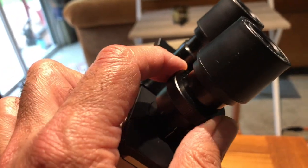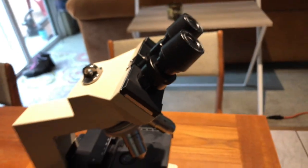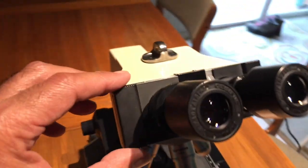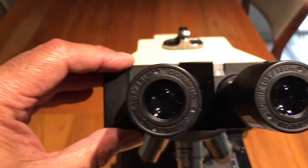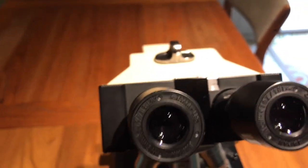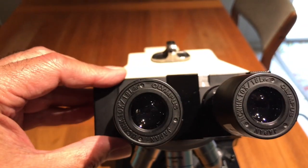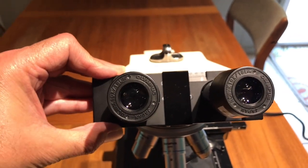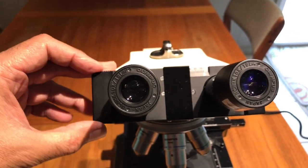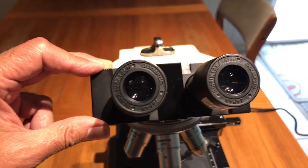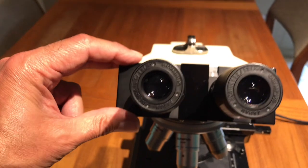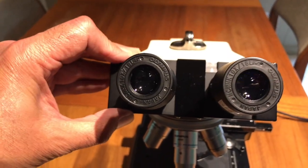The other adjustment which is key is what we call the ocular distance. You can actually adjust the distance between the eyepieces so you can have them farther apart or closer to each other. What you want to do is adjust the ocular distance so that it matches the distance between your eyes.